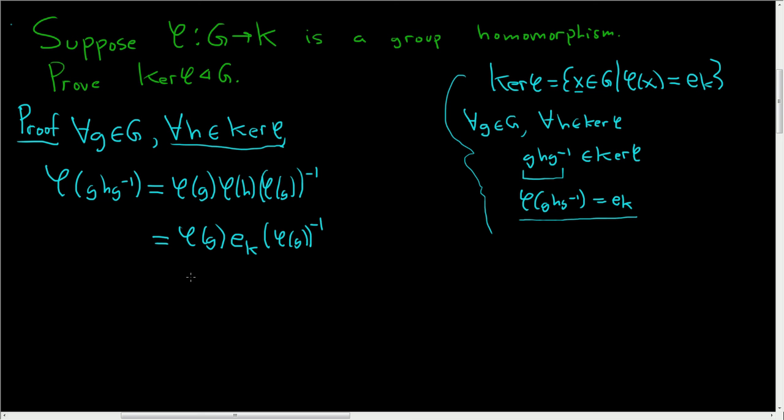Phi of g times the identity in K is just phi of g, because this is the identity.